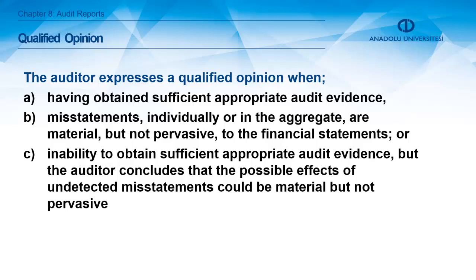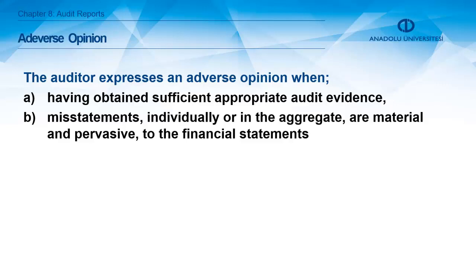The auditor expresses a qualified opinion when, having obtained sufficient appropriate audit evidence, misstatements individually or in the aggregate are material but not persuasive to the financial statements, or when there is an inability to obtain sufficient appropriate audit evidence but the auditor concludes that the possible effects of undetected misstatements could be material but not persuasive. The auditor expresses an adverse opinion when misstatements individually or in the aggregate are material and persuasive to the financial statements.